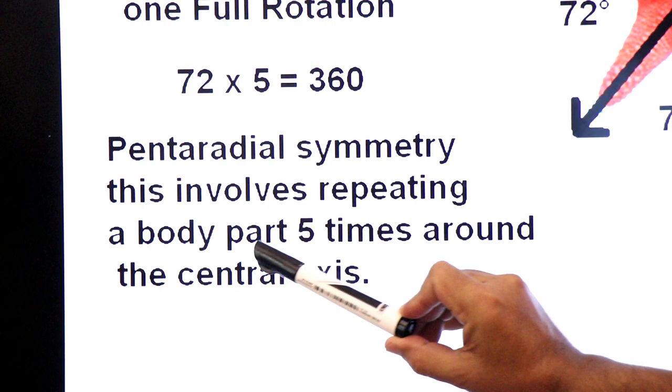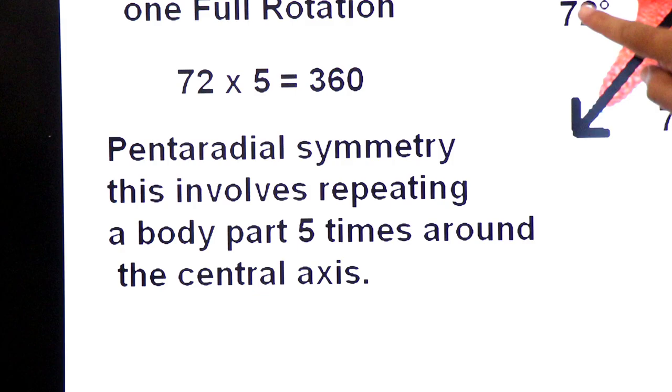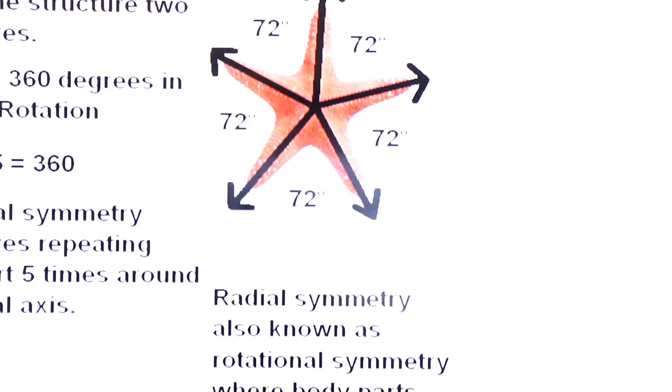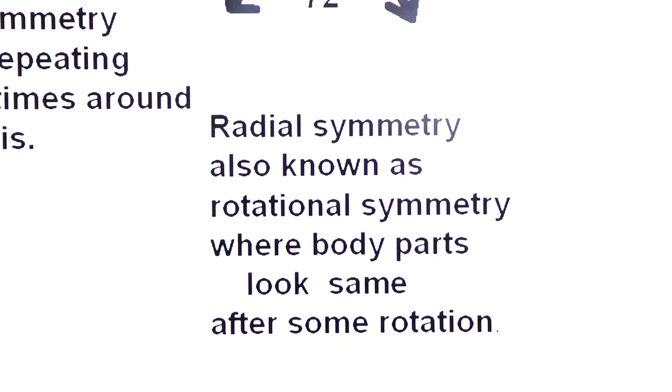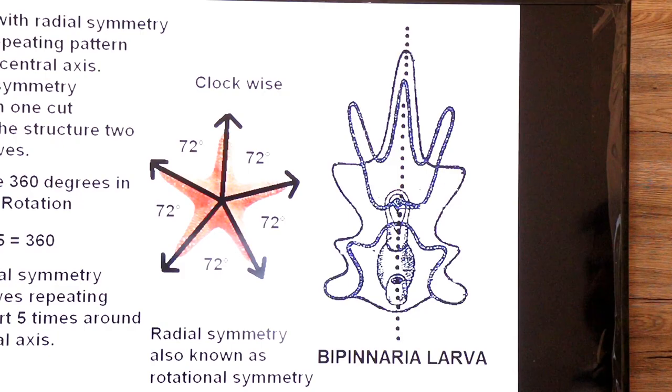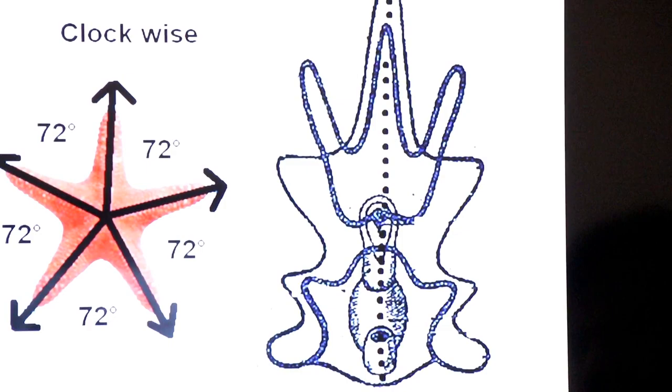Dear students, it is pentaradial symmetry. Pentaradial symmetry involves repeating a body part 5 times around the central axis. Dear students, this radial symmetry is also known as rotational symmetry, where body parts look same after some rotation.